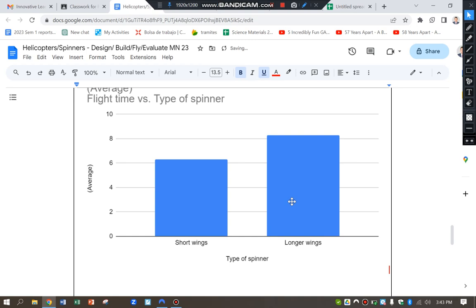And I can see from my results here that the spinner with the longer wings was flying in the air the longest. So for me, from my results here, they show that longer wings are better for keeping the spinner in the air for longer.